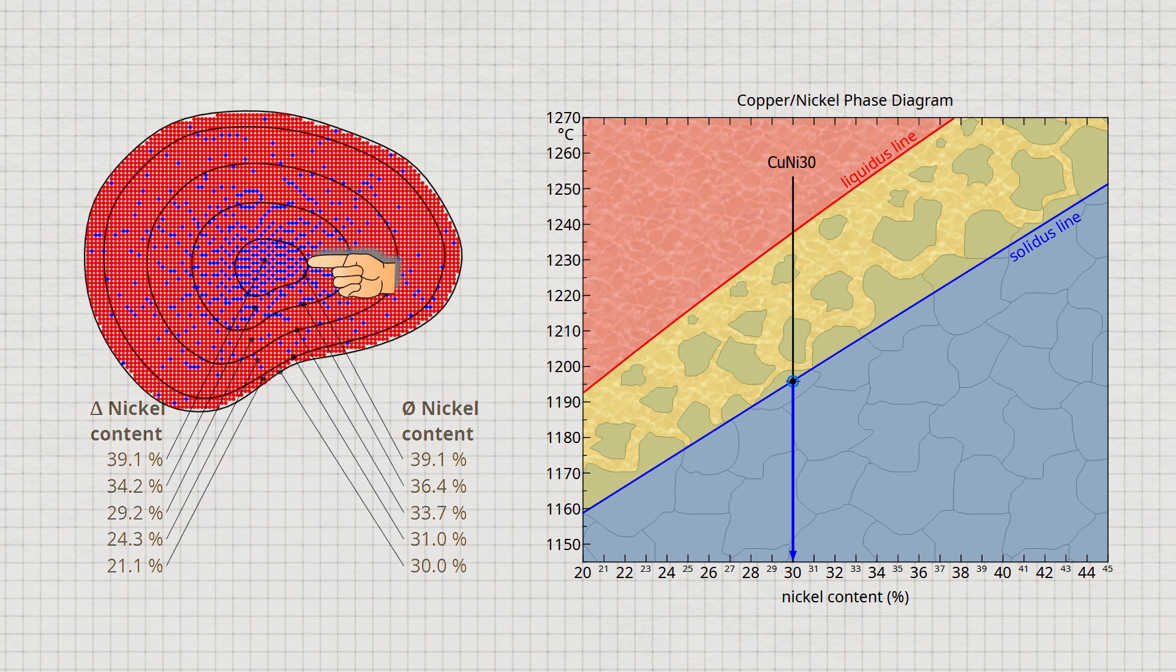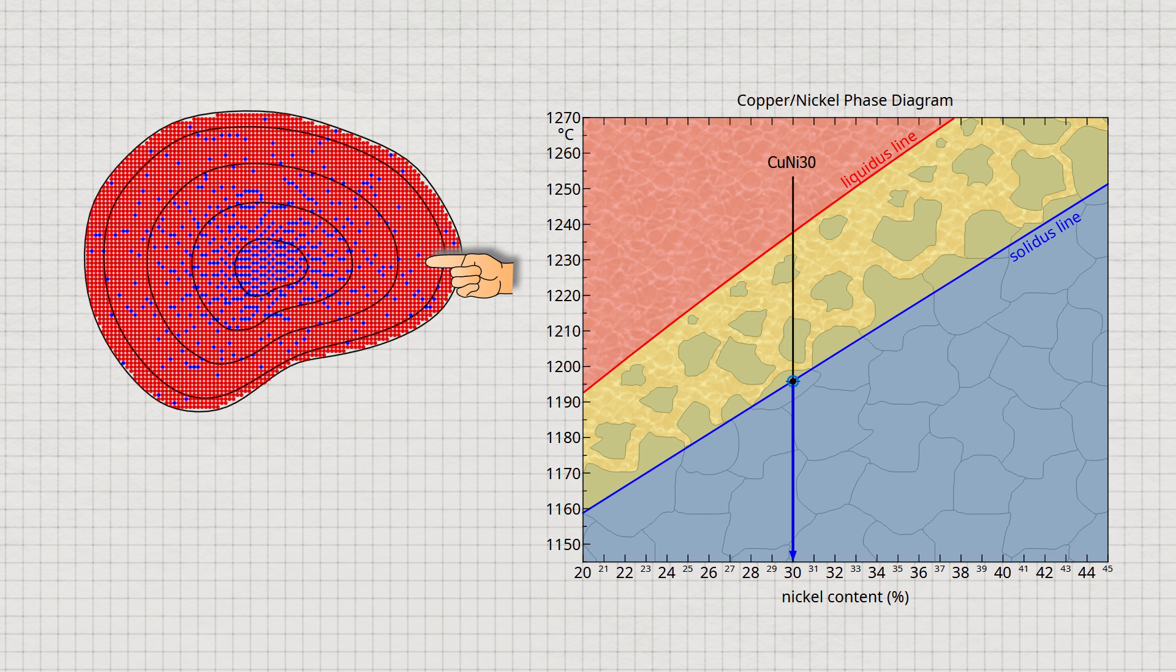Therefore, the nickel concentration decreases continuously from the center of the grain to the edges. In this way, the formation of crystal segregation can be explained.